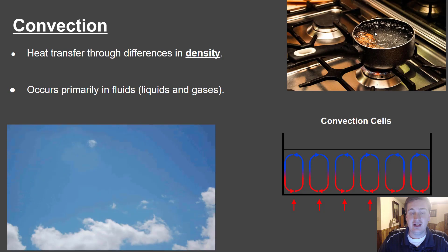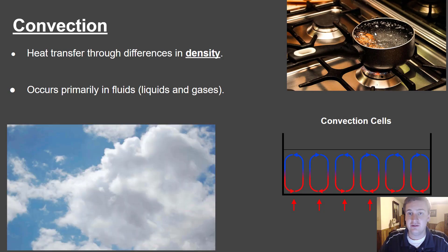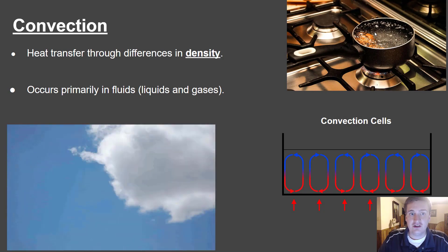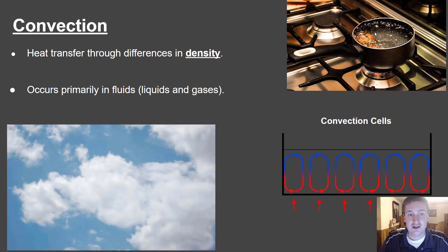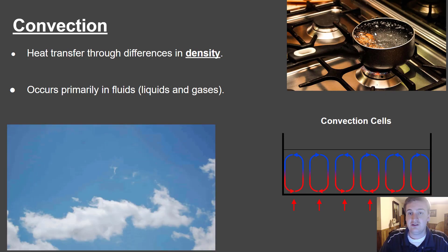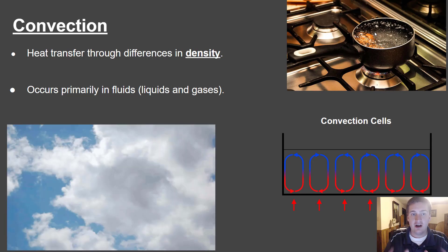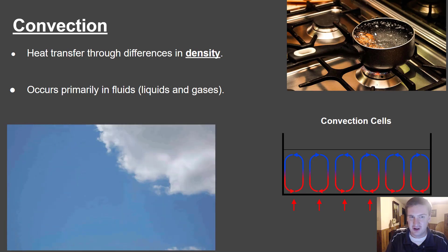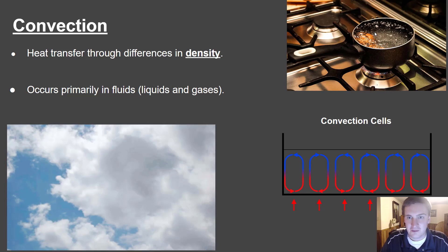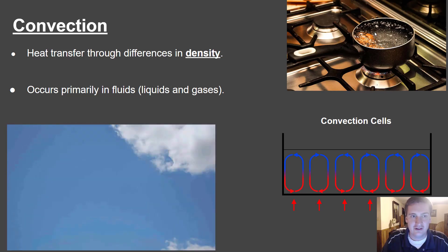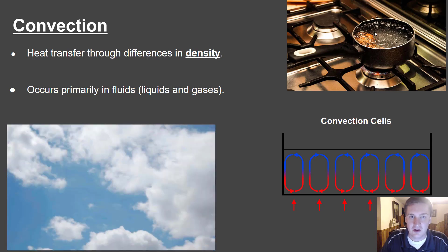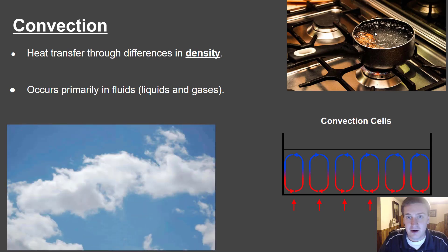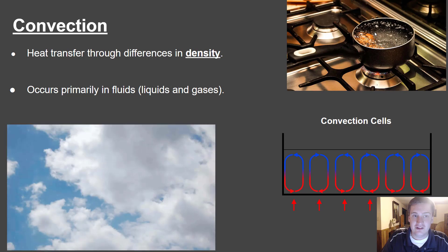Okay, moving on, the next process of heat transfer that we will discuss is the process of convection. Convection is arguably the most important to understand in an Earth's systems context. Convection is the process of heat transfer through differences in density. So whereas conduction - and I know those words are pretty similar, conduction, convection, sometimes I get those mixed up myself - but one way to keep track of those is that conduction occurs mostly in solids. That's what we were just talking about.